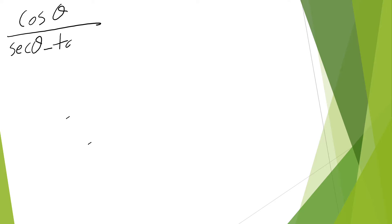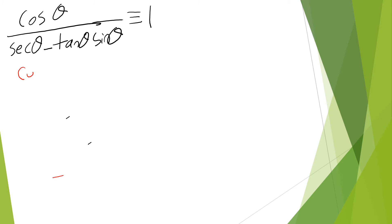Okay, we'll have a bit longer one. Cosine theta over secant theta minus tan theta times sine theta equals one. The left-hand side is way more complicated than the right-hand side, so I'm trying to open up the left-hand side and simplify. Because the right-hand side is one, I need to simplify everything as much as possible and reduce to get one. So I'm going to open it up — secant is one over cosine theta, minus tan which is sine theta over cosine theta, times sine theta.